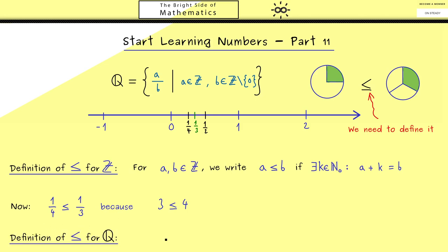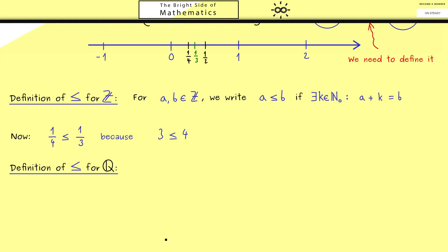And this idea we now can put into a general definition. For this, let's take two arbitrary fractions a over b and c over d. Then our new inequality should be defined by the old one just by multiplying with the denominators. This makes total sense when you think of comparing ratios here.